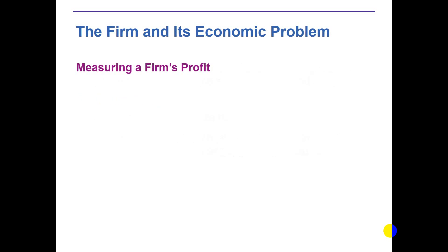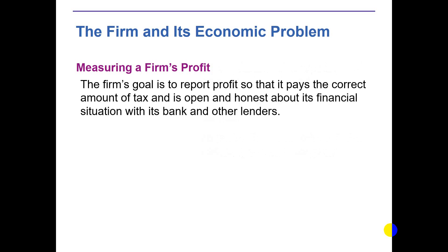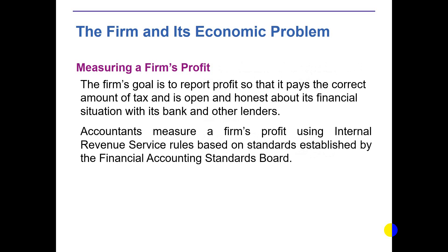How does a firm measure profit? Measuring a firm's profit — the firm's goal is to report profit so that it pays the correct amount of taxes and is open and honest about its financial situation with its banks and other lenders. Here comes the difference between accountant and economist. Accountants follow the rules of international financial agencies, such as financial accounting standard board rules or general financial rules, and measure the firm's profit using those standards.